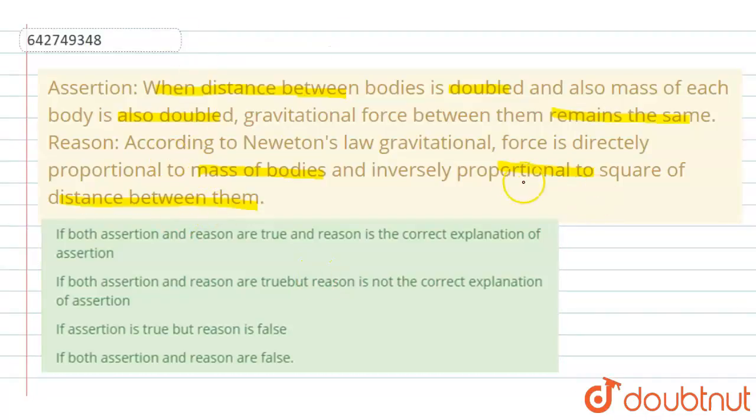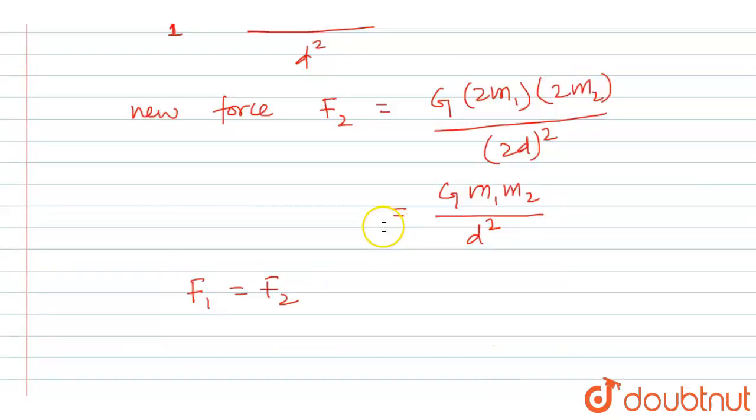So, our answer will be, yeah, assertion is true and the reason is exactly saying that. So, reason is also true. So, our answer will be option A. Both assertion and reasons are correct and reason is the correct explanation for assertion.